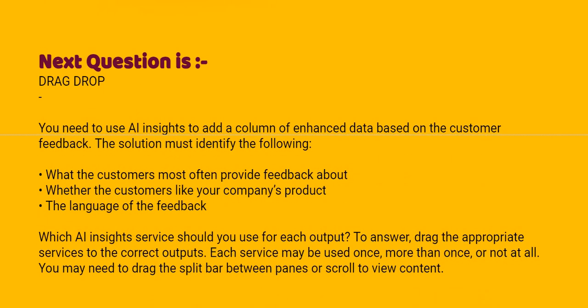Next: you need to use AI Insights to add a column of enhanced data based on customer feedback. The solution must identify the following: what customers most often provide feedback about, whether the customer likes your company's product, and the language of the feedback. Which AI Insight service should you use for each output? Drag the appropriate service to the correct output. Each service may be used once, more than once, or not at all.